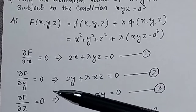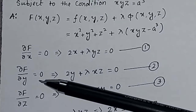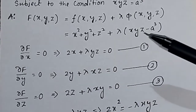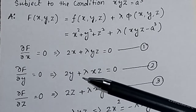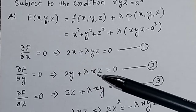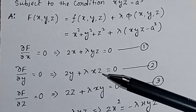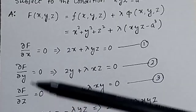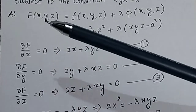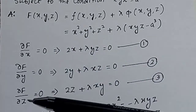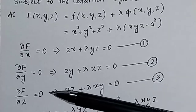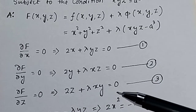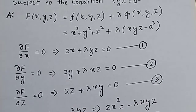Taking the partial derivative with respect to y gives 2y + λxz = 0. And taking the partial derivative of L with respect to z gives 2z + λxy = 0.